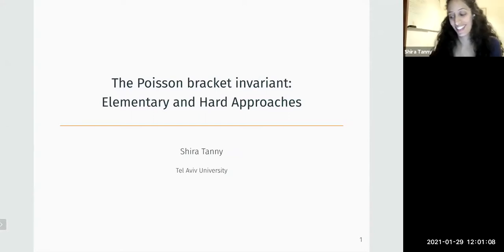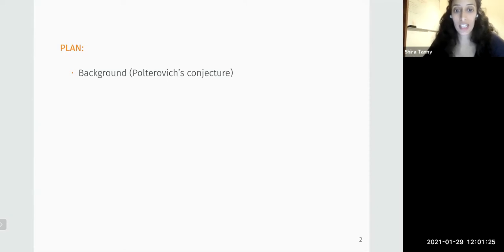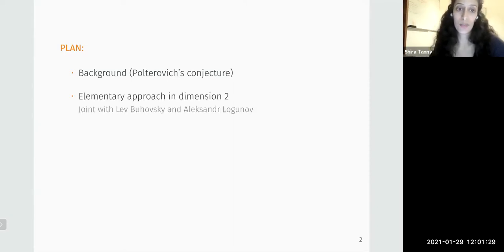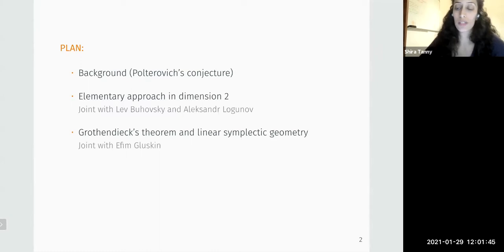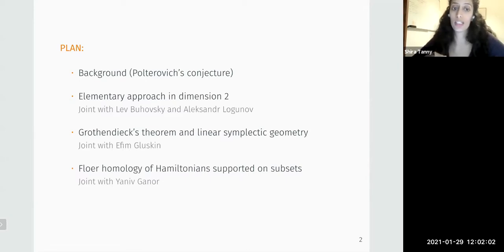Thank you very much for having me. I'm going to discuss three projects today, all related to a conjecture by Polterovich. This conjecture concerns the Poisson bracket of partitions of unity. I'll start with background and stating the conjecture. The first project, joint with Lev Buhovsky and Alexander Logunov, is a proof of this conjecture in dimension 2. One piece of the proof has a functional analytic flavor, so the second project, joint with Yefim Glushkin, applies Grothendieck's theorem for functional analysis to this problem.